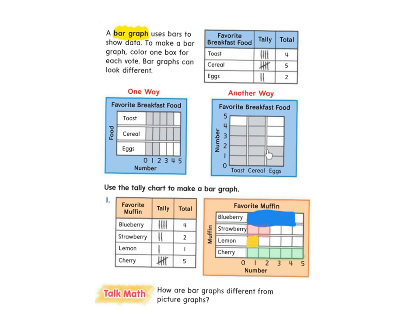That's where bar graphs become helpful. So you can very quickly see cherries, the most popular, lemons, the least popular. You can still see that on a picture graph, but it's a little bit easier to see on a bar graph.